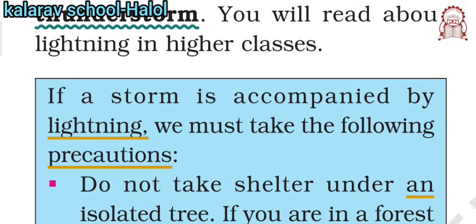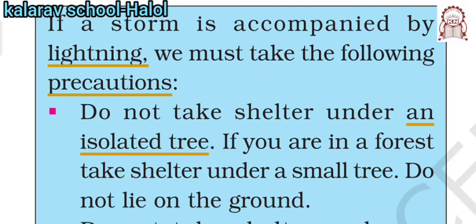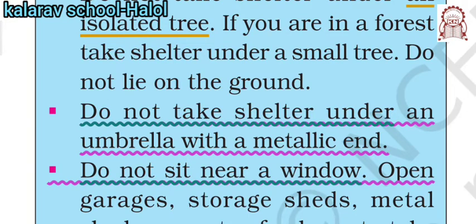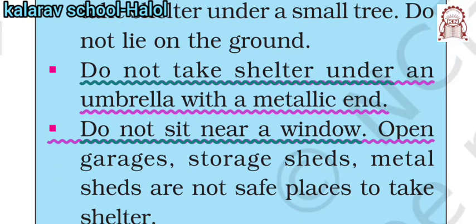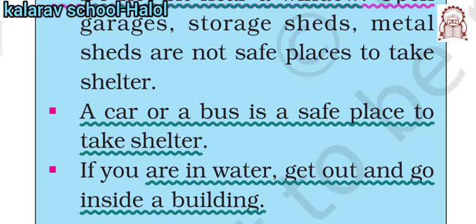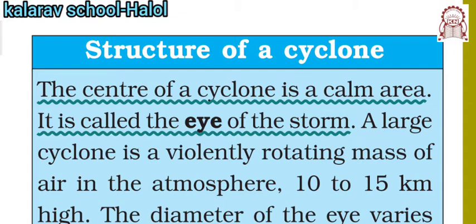If a storm or thunderstorm is accompanied by lightning, we should take some precautions. First, do not take shelter under a tree. Don't lie on the ground. Don't take shelter under anything with a metallic end, like an umbrella. Don't sit near windows, garages, or metal sheds. You can take shelter in a car or bus — that is safe. If you are in water, try to come out and go inside a building.